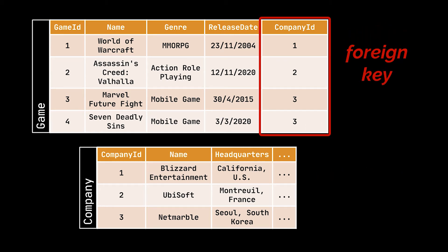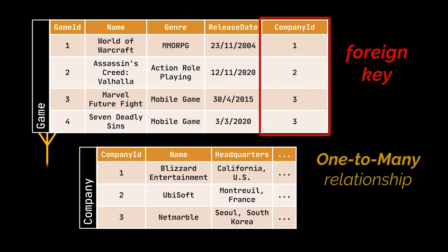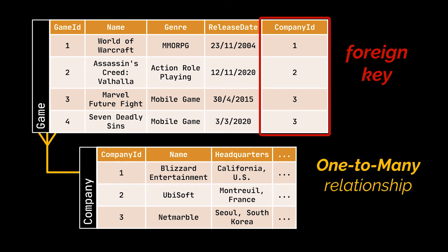When such keys are used, the relationship they define is referred to as a one-to-many relationship: one company might develop many games, but a game belongs to one company only.